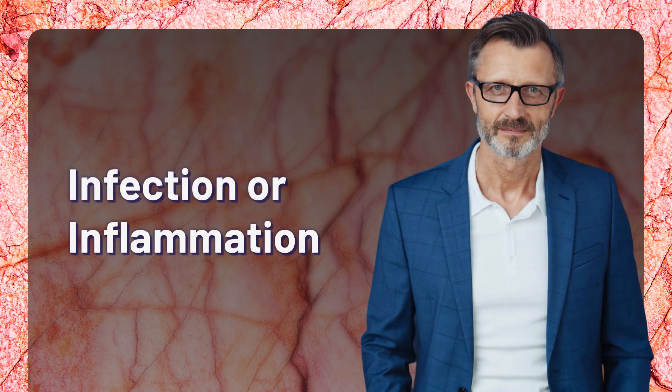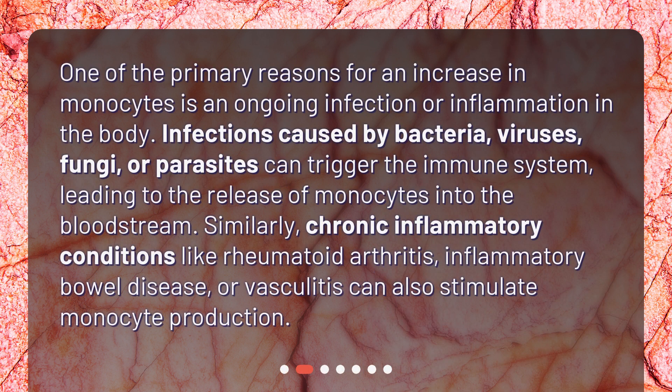Infection or Inflammation: One of the primary reasons for an increase in monocytes is an ongoing infection or inflammation in the body. Infections caused by bacteria, viruses, fungi, or parasites can trigger the immune system, leading to the release of monocytes into the bloodstream. Similarly, chronic inflammatory conditions like rheumatoid arthritis, inflammatory bowel disease, or vasculitis can also stimulate monocyte production.